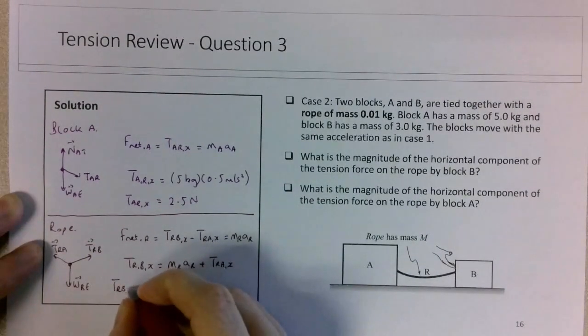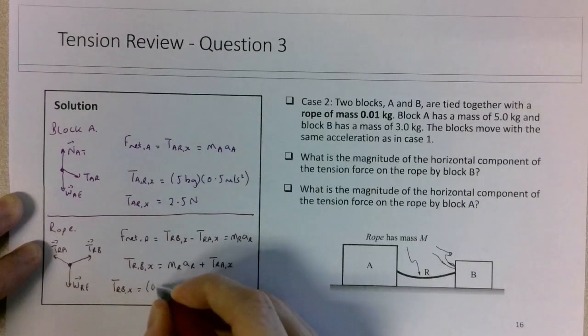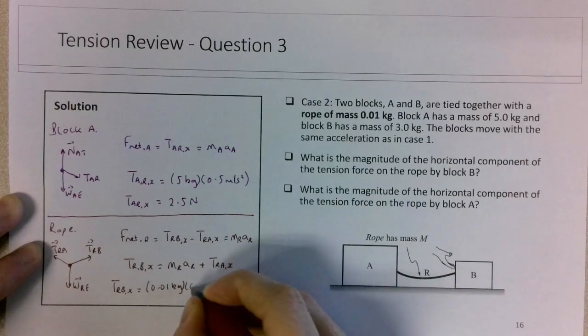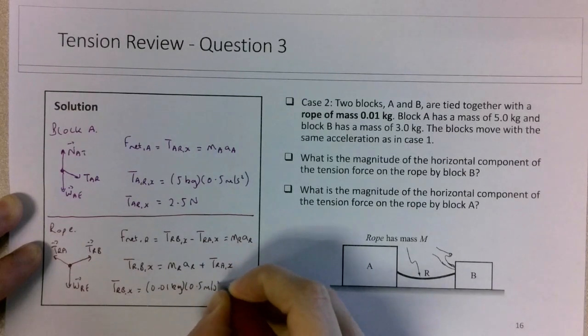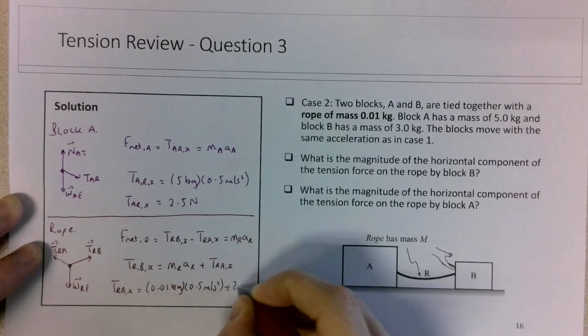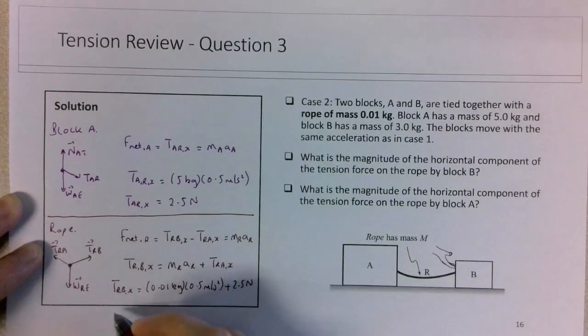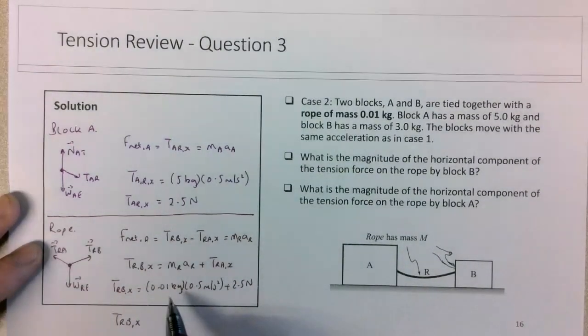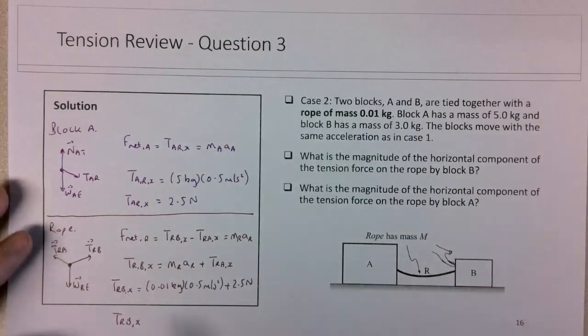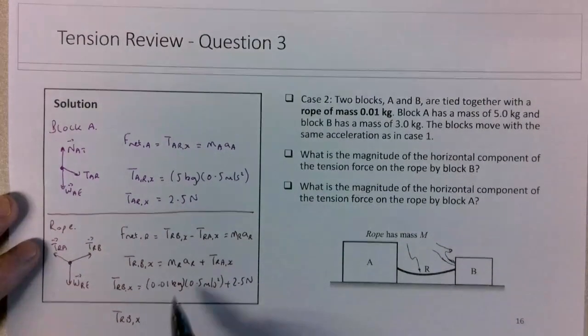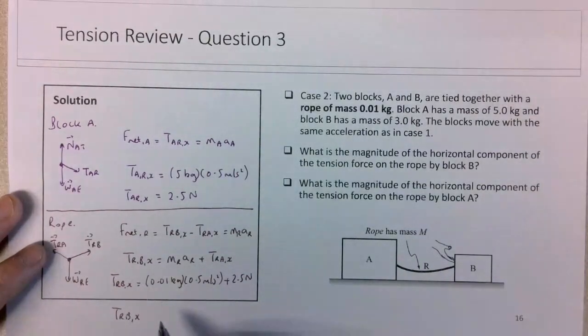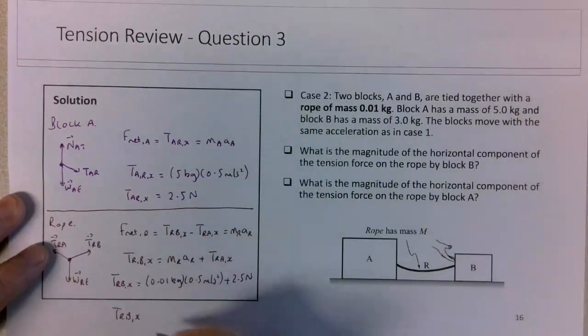So T_RB_x, mass of the rope is quite small, 0.01 kg times the acceleration that we've previously determined, plus this 2.5 newtons. So the ma term, the net force on the rope, is quite small because it has a very small mass and a small acceleration of 0.005 newtons.